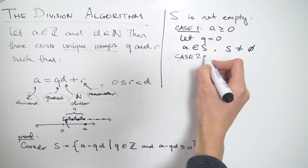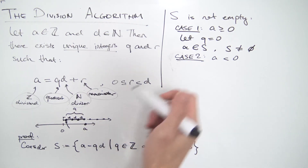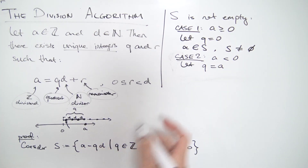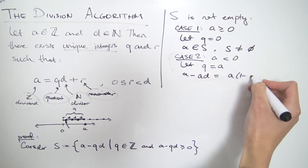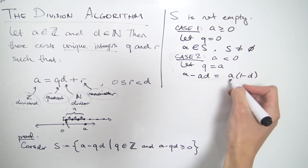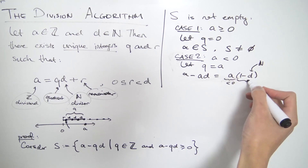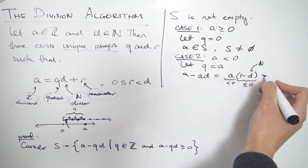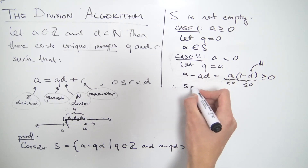Case two: A is less than zero. We need to construct an element that lies in the set. We can let Q equal A. Then A minus QD becomes A minus A·D, which we can rewrite as A times (1 minus D). Since A is negative and D is a natural number, (1 minus D) is less than or equal to zero. So we have a product of two non-positive numbers, which is greater than or equal to zero. We've constructed an element of the set, so S is not empty.